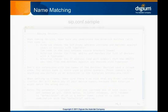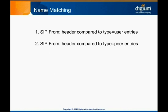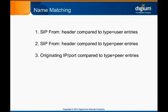First, Asterisk compares the name in the sip.conf header to any sip.conf entries where type equals user. If no match is found, Asterisk compares the sip.conf header to any type equals peer entries. Finally, if there are still no matches, Asterisk checks the IP address and port from which the invite was sent and compares against any type equals peer entries. This means that if you're not careful when naming devices, Asterisk might match a call to a device you didn't expect. This is particularly likely when you name your devices after phone numbers. For more about device naming, including recommended best practices, see the Device Naming Conventions module in the VoIP Fundamentals chapter.